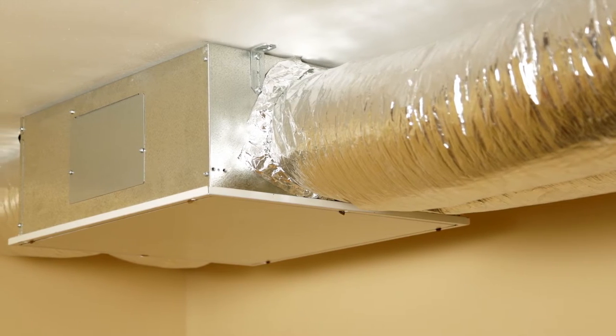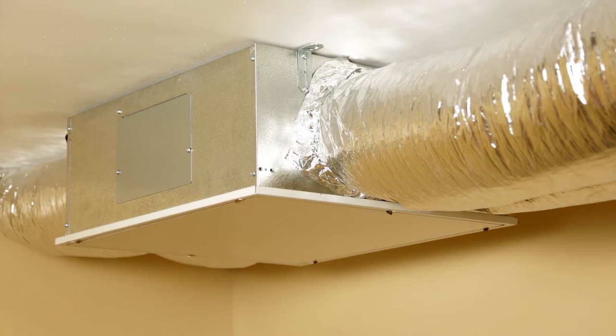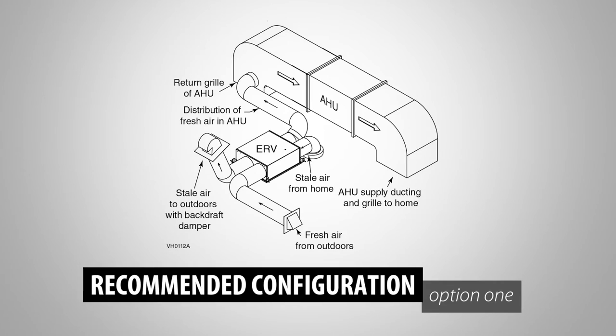There are two ways to integrate the ERVS-100 with the air handling unit. The recommended configuration distributes fresh air from the ERVS-100 into the air return of the AHU. In this configuration, the connection should be made as close as possible to one of the AHU return grills to ensure proper functioning of the built-in fresh air damper. In this configuration, you likely will want to install the stale air exhaust registers in a bathroom, kitchen, or living room.